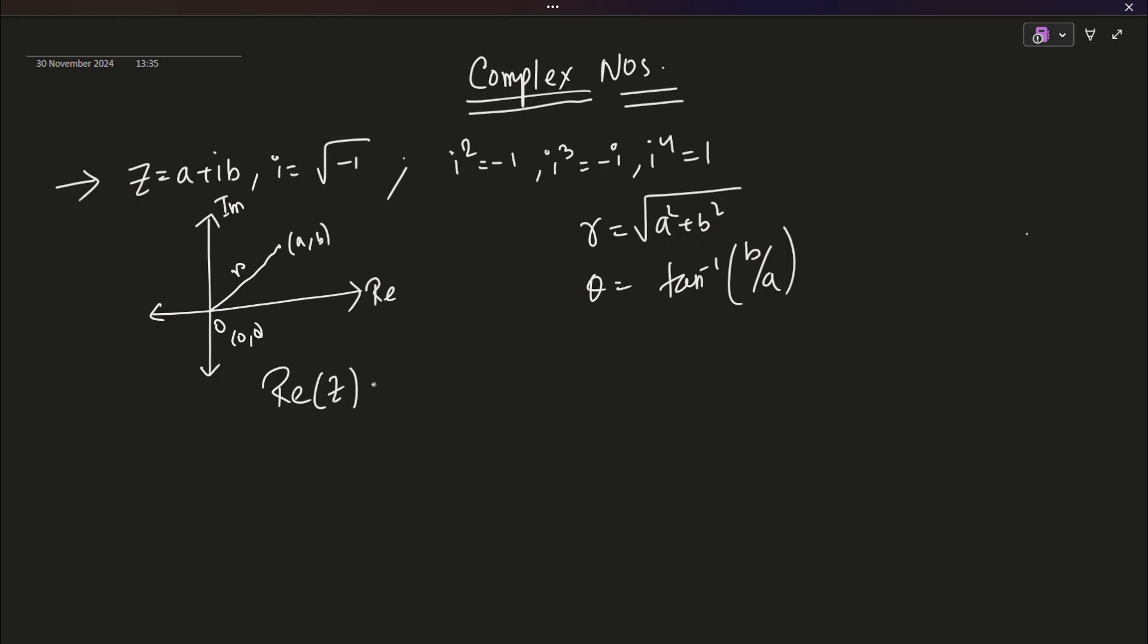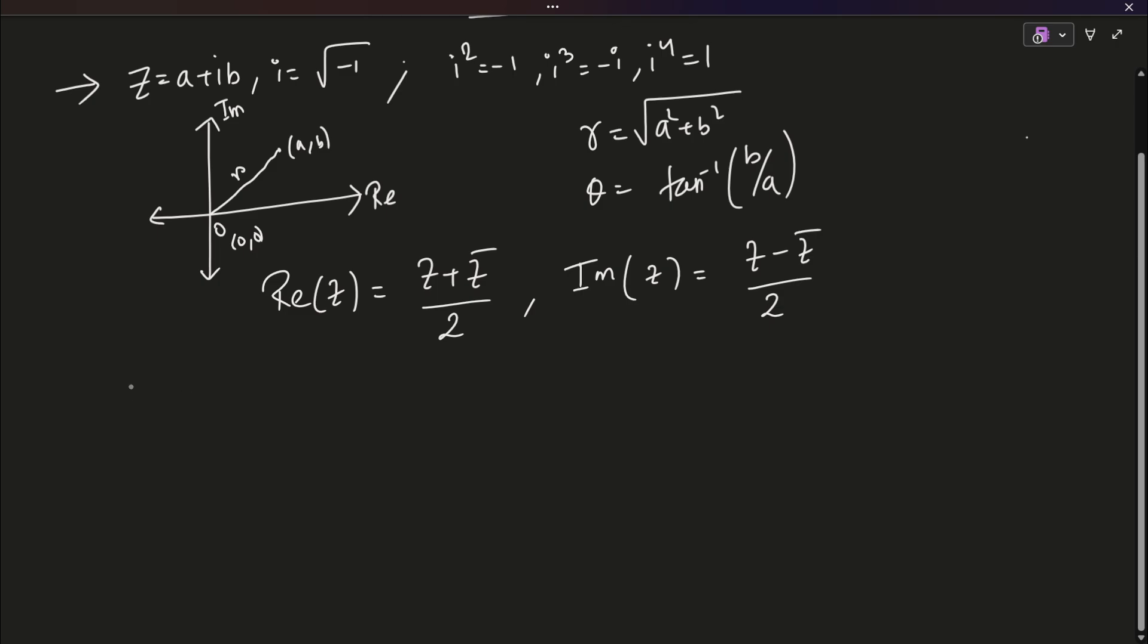The real and imaginary part also have an expression in terms of conjugates, which is real part is Z plus Z bar by 2 and imaginary part is called Z minus Z bar by 2. Now, you should all know this basic fundamentals. You can get it from any book or your materials, but let us explore something better here.